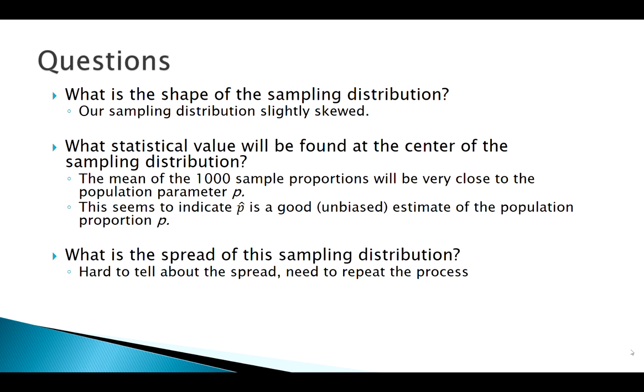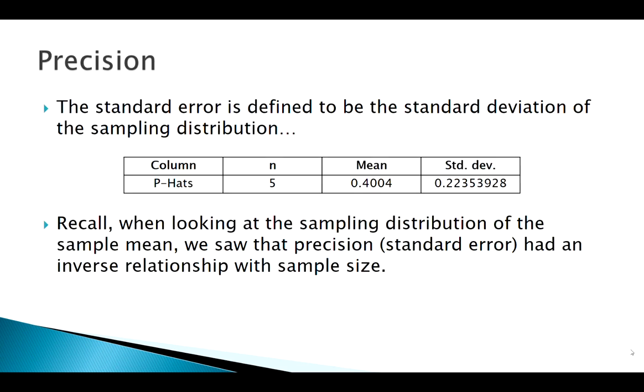But the spread is pretty big. But to see how the spread is relative to something else, we need to repeat this process. We're going to bump up our sample size to see does the spread depend on a certain quantity. So let's look at the actual numbers. The mean, right at 0.4, so pretty good, pretty accurate.